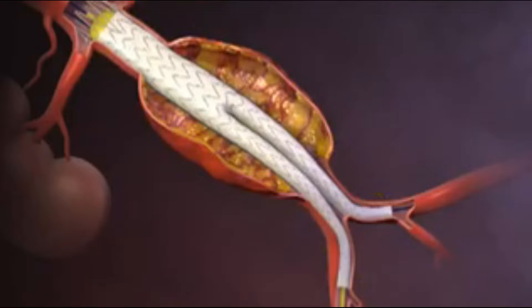Finally, the sheaths and guide wires are removed and the femoral artery is repaired. Aortic blood subsequently flows through the stent graft.